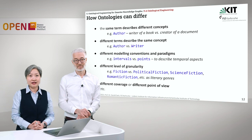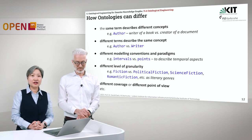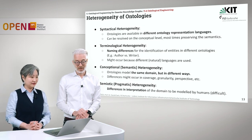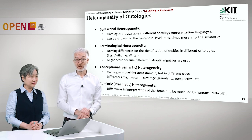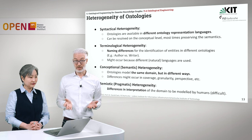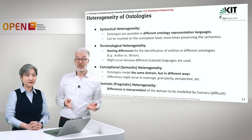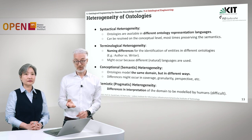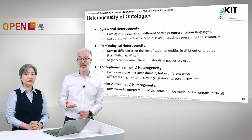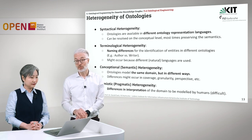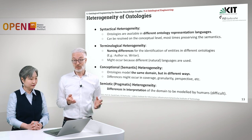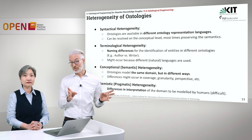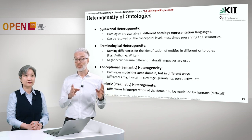The last item on this slide is different coverage or different points of view. Looking at the heterogeneity of ontologies, the most straightforward type is syntactical heterogeneity, where ontologies are available in different representation languages. You might represent an ontology in pure RDFS or use any kind of dialect of OWL that is available, including even rules. If they are heterogeneous in terms of different representation languages, this can be resolved purely on the conceptual level, most times preserving the semantics, depending on the semantic expressivity exposed in your ontology.